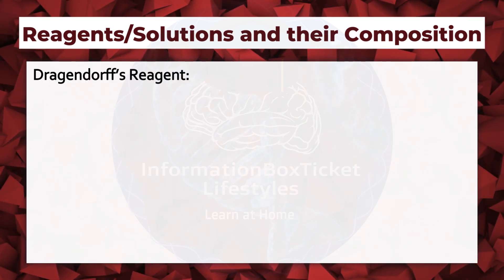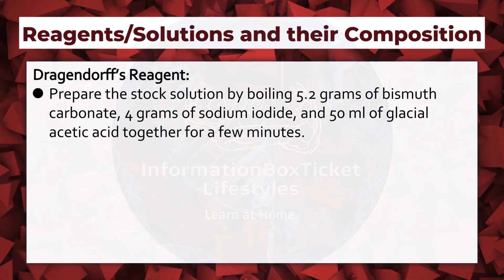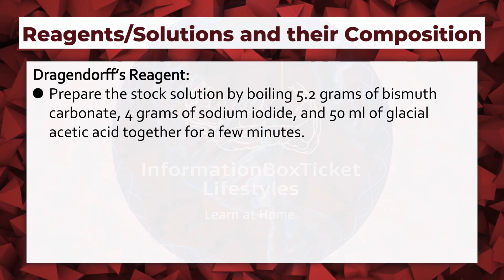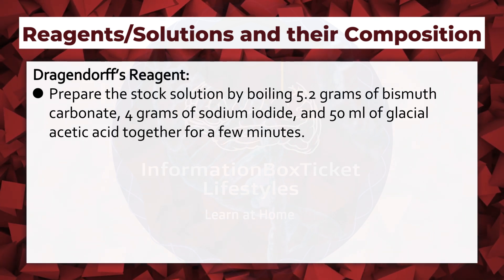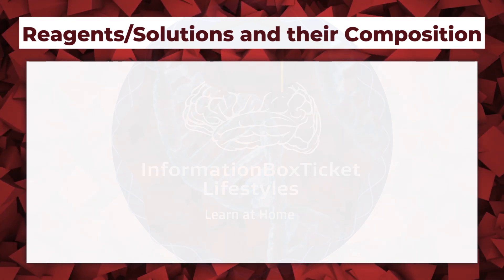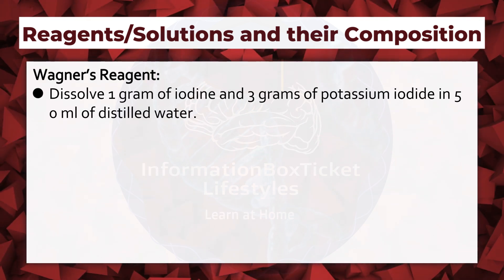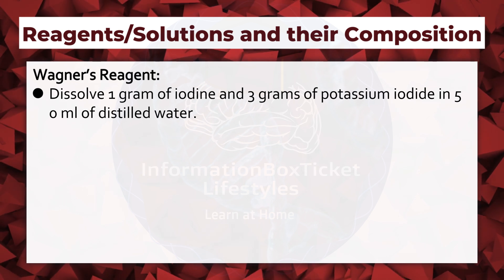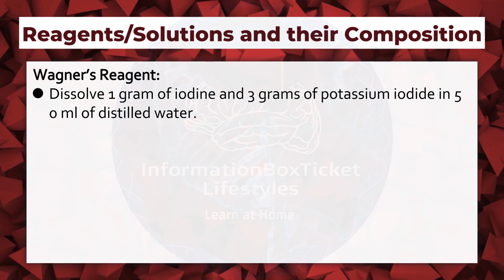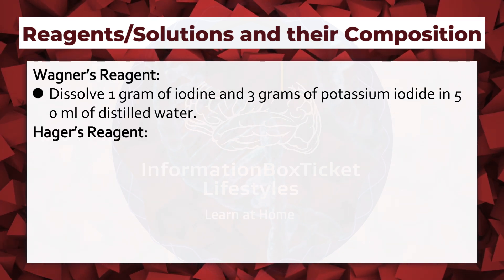Dragendorf's Reagent: prepare the stock solution by boiling 5.2 grams of bismuth carbonate, 4 grams of sodium iodide, and 50 milliliters of glacial acetic acid together for a few minutes. Wagner's Reagent: dissolve 1.3 grams of potassium iodide in 50 milliliters of distilled water. Hager's Reagent: dissolve 1 gram of picric acid in 100 milliliters of distilled water.